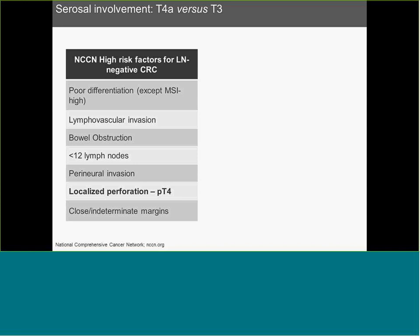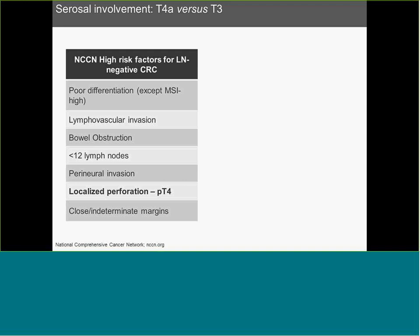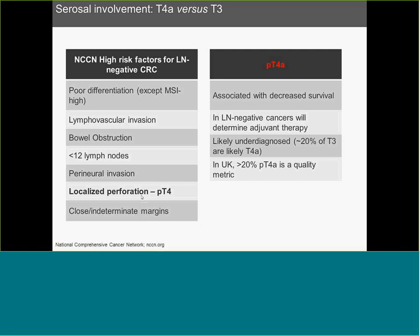Moving on to serosal involvement. Clinical colleagues are often faced with how to deal with lymph node negative colorectal cancers. They follow the NCCN guidelines, which stipulate that one of the highest risk features for lymph node negative colorectal cancer is local perforation, or pT4. pT4A is associated with decreased survival and, as the NCCN stipulates, will determine adjuvant chemotherapy in lymph node negative colorectal cancers. It is likely underdiagnosed, and up to 20% of T3 lesions are likely T4A.